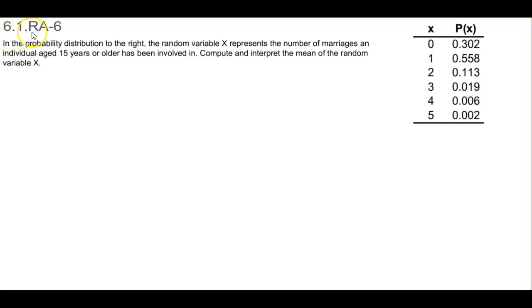Section 6.1 RA-6. In the probability distribution to the right, the random variable x represents the number of marriages an individual aged 15 years or older has been involved in. We want to compute and interpret the mean of the random variable x.